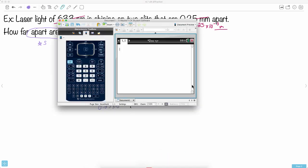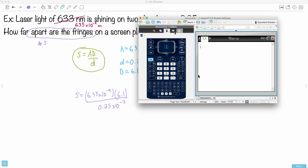I just need a calculator for this. I'll get out my trusty calculator and do this. I'll make a pretty fraction here and say: 633 times 10 to the minus 9, all that times 6.1, all that divided by 0.25 times 10 to the minus 3.